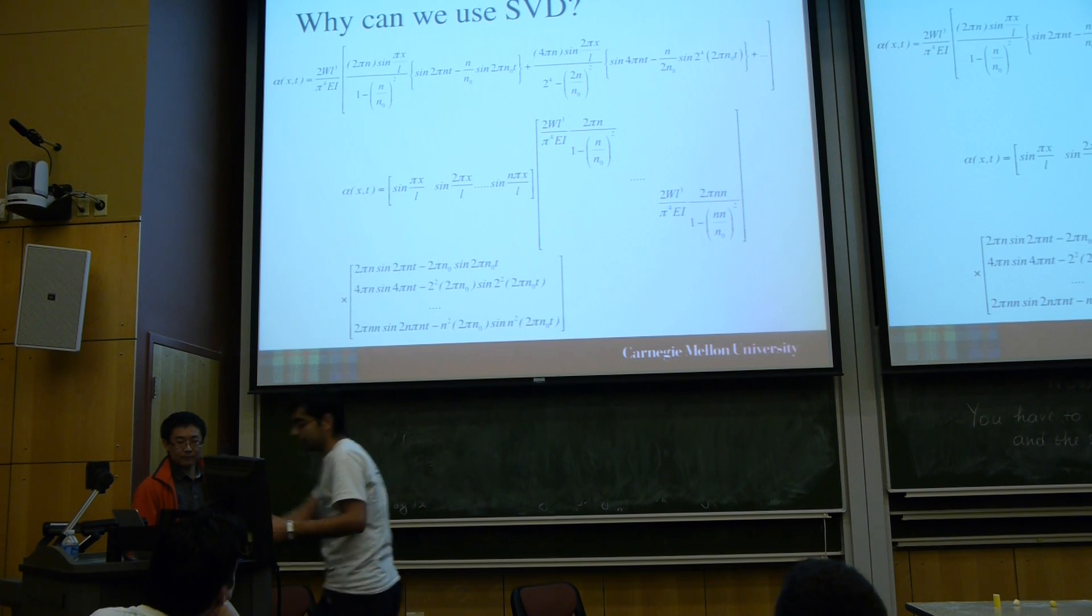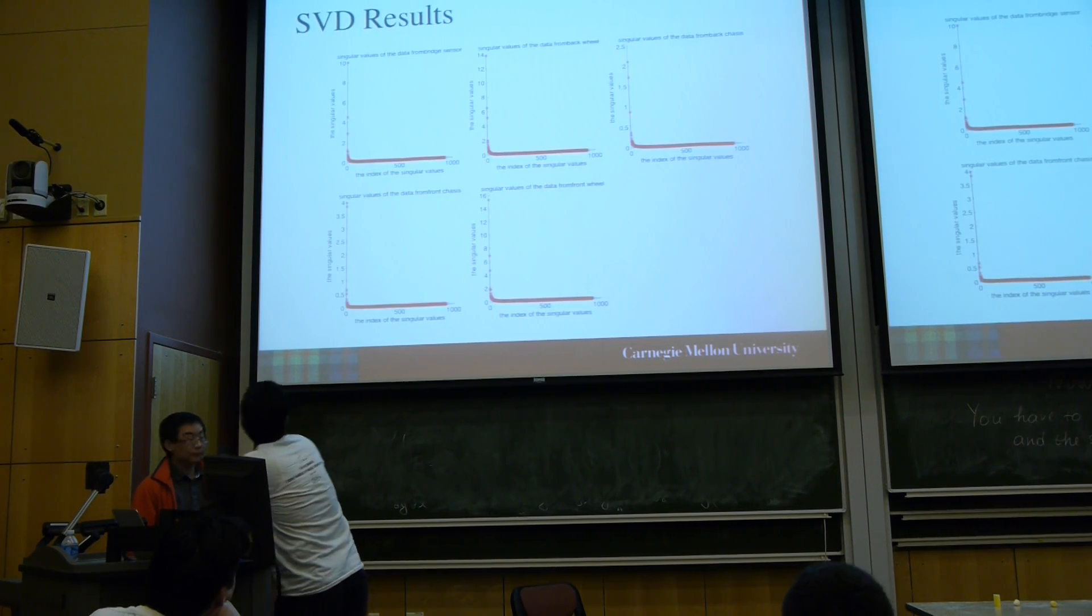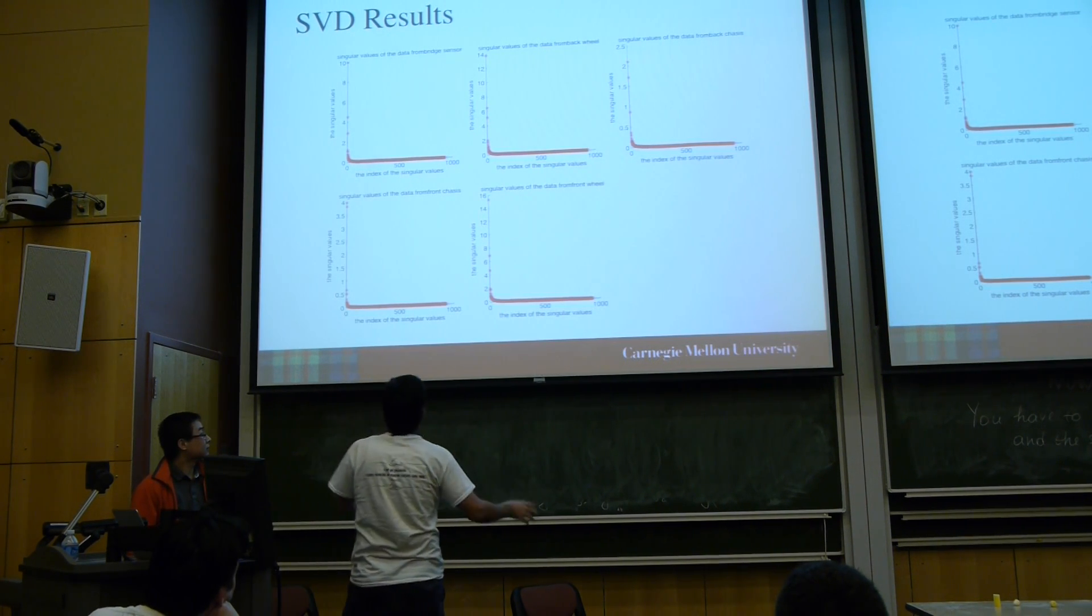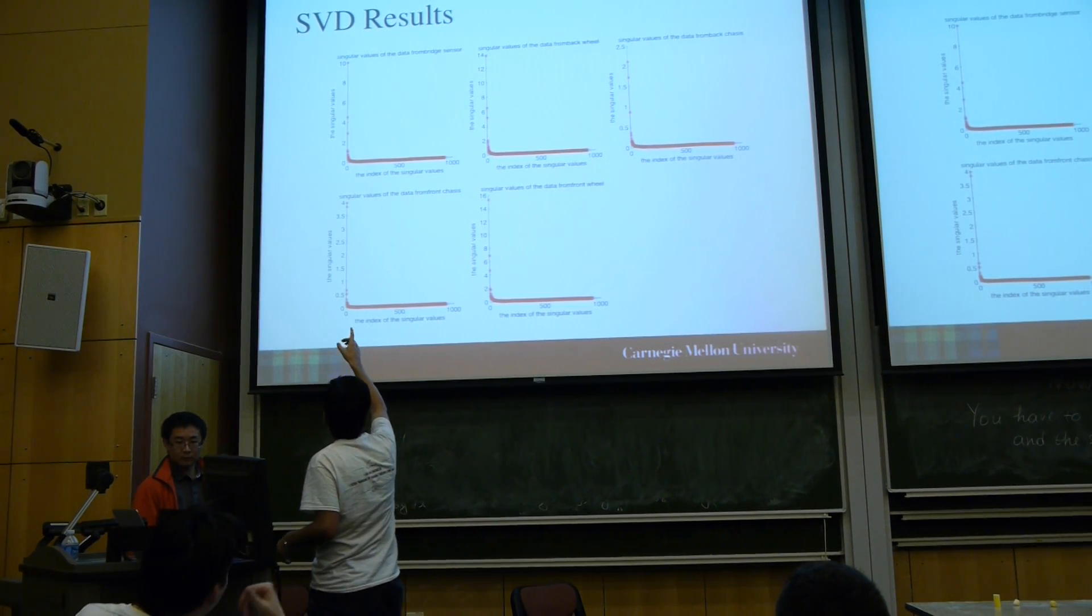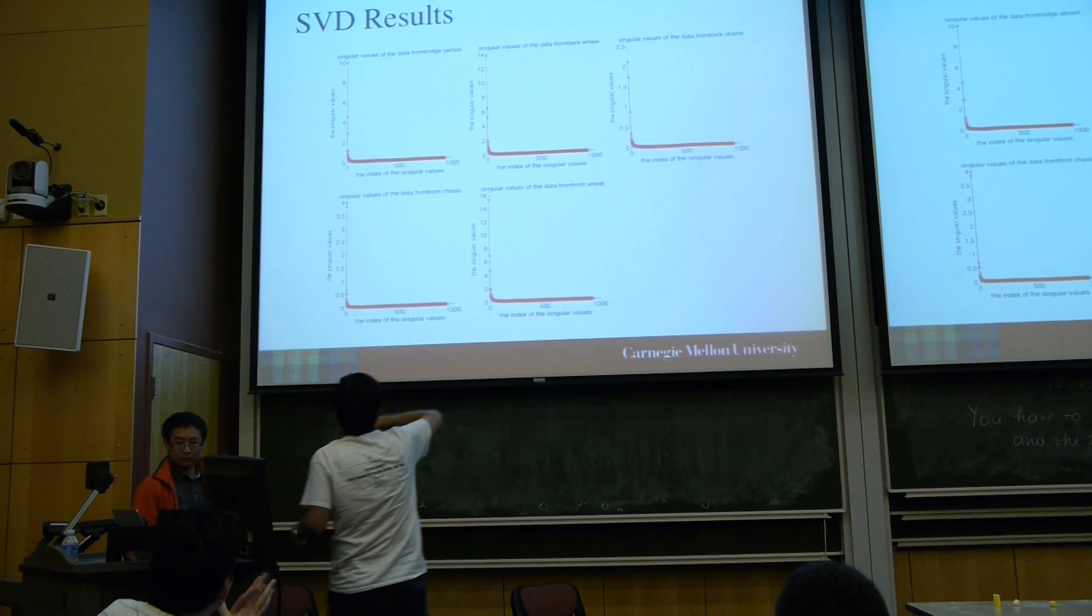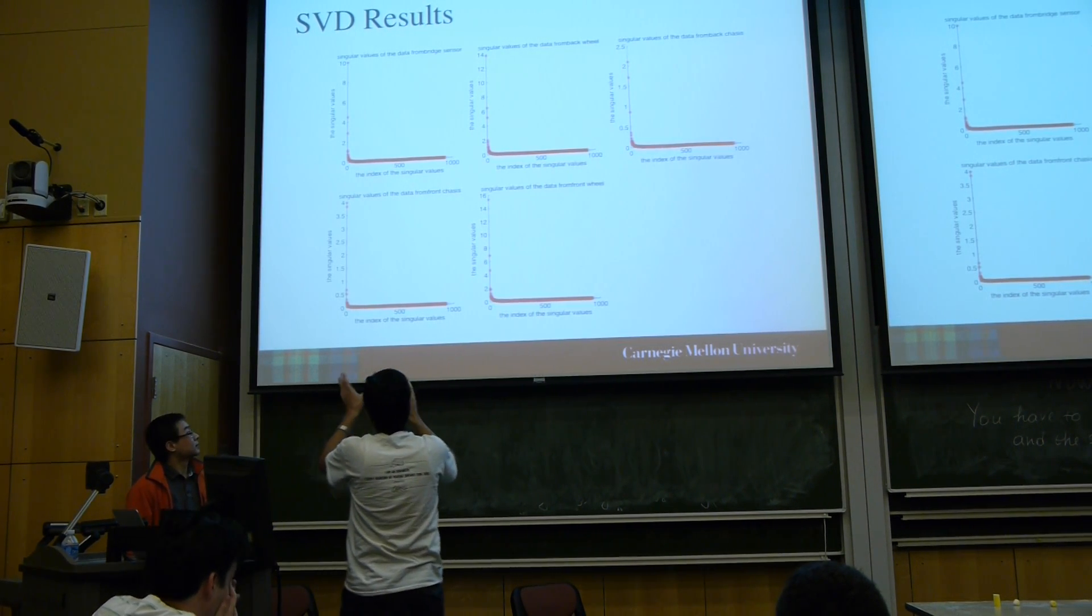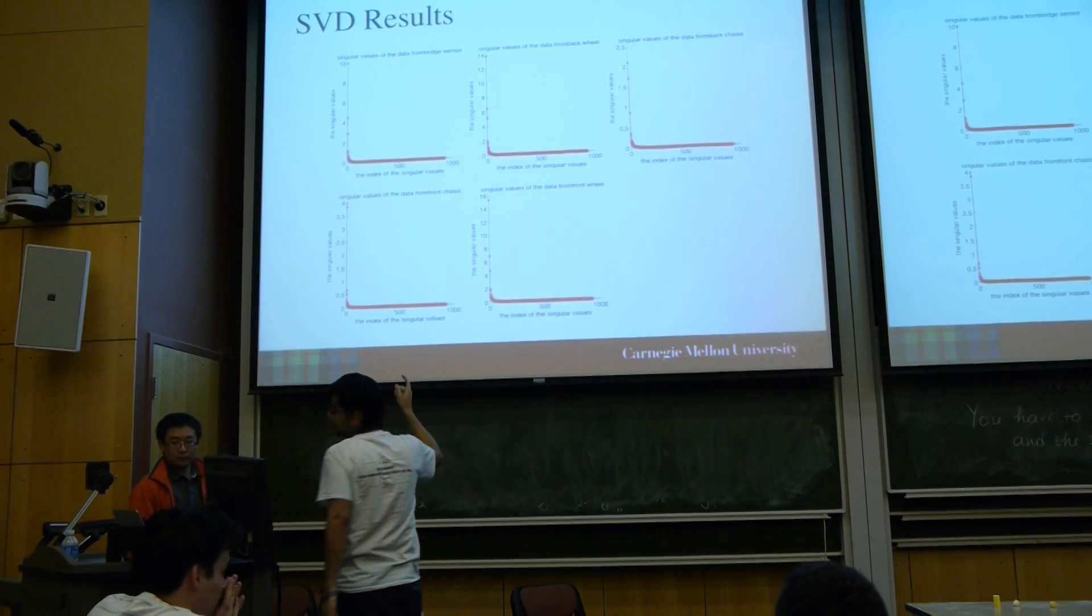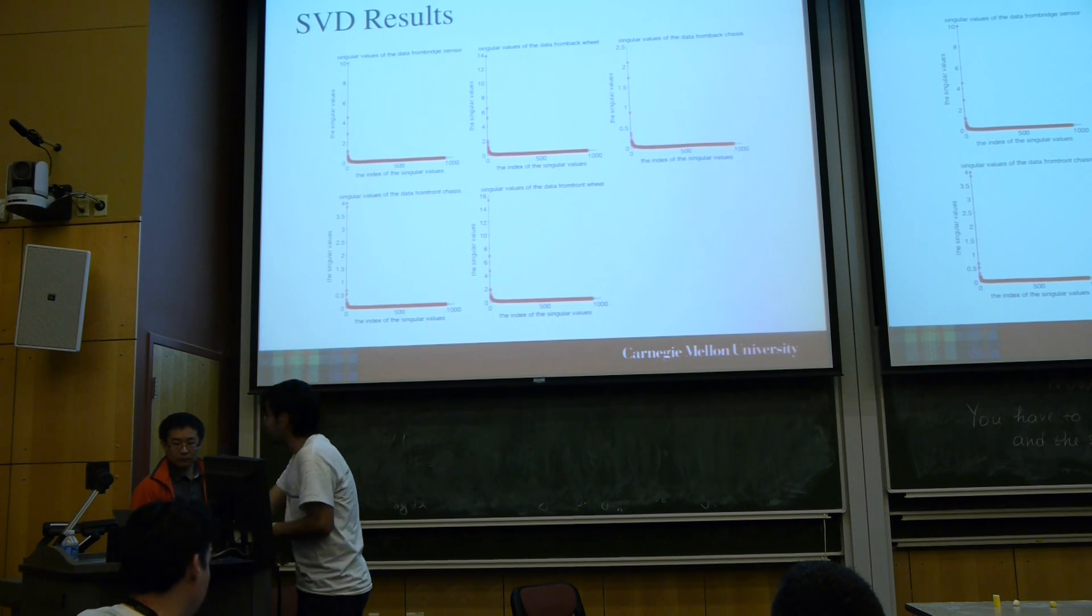After getting our data, we used SVD. Although we had 930 features, as you see, the eigenvalues for just a few of them is great. Around 50, the eigenvalues up to 50 of them is more than zero, and the others are zero. So we selected the first one to reconstruct our data.